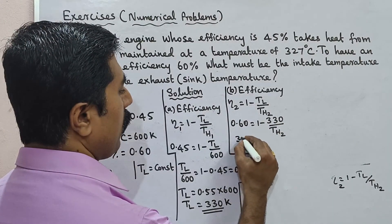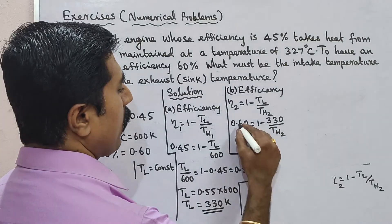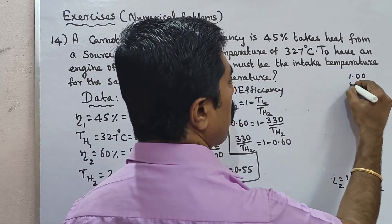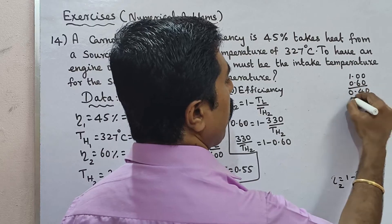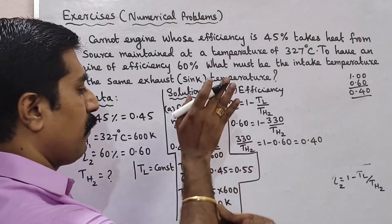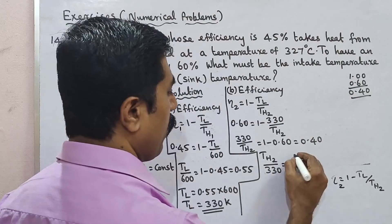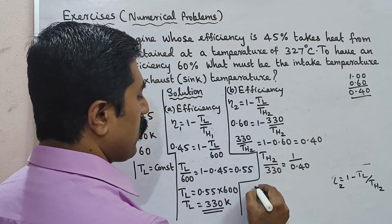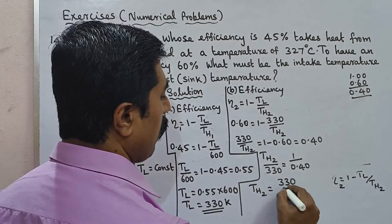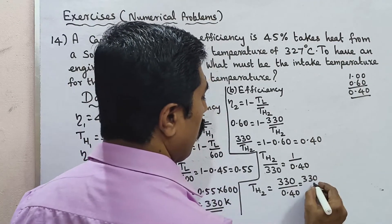Rearranging, 330 divided by TH2 equals 1 minus 0.60, which equals 0.40. Therefore TH2 equals 330 divided by 0.40.